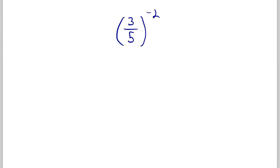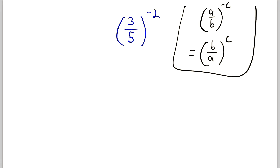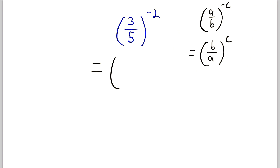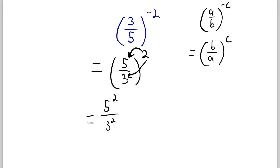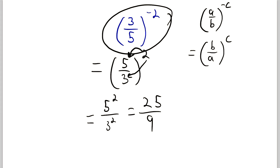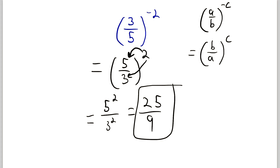Here's the next one: three over five, all to the power of negative two. If we have a fraction to a negative exponent — say a over b to the power of negative c — that is equal to b over a to the power of positive c. This is just a result of the usual negative exponent rule. So we can rewrite this as five over three to the power of positive two. The exponent goes to both the numerator and denominator, so this equals five squared divided by three squared, which of course is equal to 25 divided by nine.